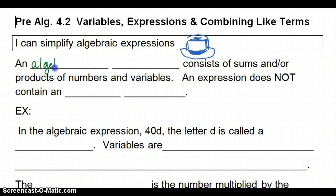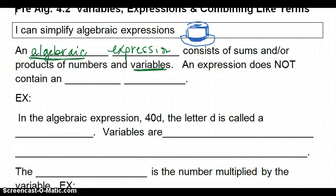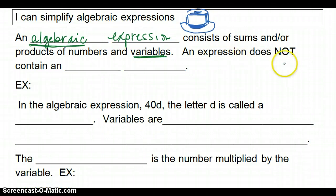An algebraic expression consists of sums and or products of numbers and variables. Sums means they're adding or subtracting, and or products mean they're multiplying or dividing of numbers and variables. The whole thing that makes it algebra is when there is a variable involved. An expression does not contain an equal sign. If there's an equal sign, it becomes an equation, so we only are talking about expressions.